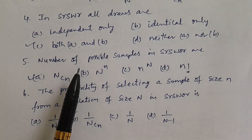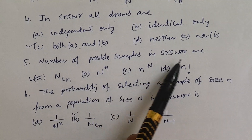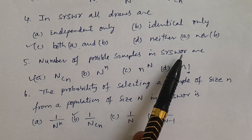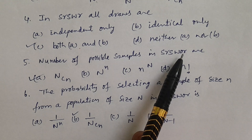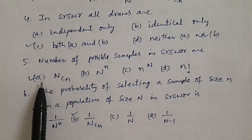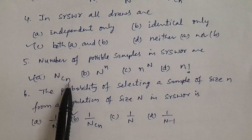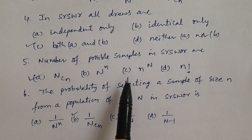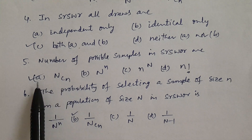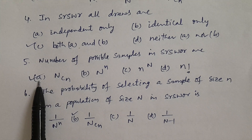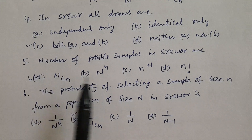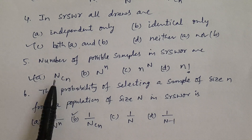Question number 5. Number of possible samples in SRSWOR — simple random sampling without replacement. What are the total number of possible samples? Options: A) capital N C small n, B) capital N power small n, C) small n power capital N, D) n factorial. Answer is capital N C small n, option A. In SRSWR it is capital N power small n; in SRSWOR it is capital N C small n.